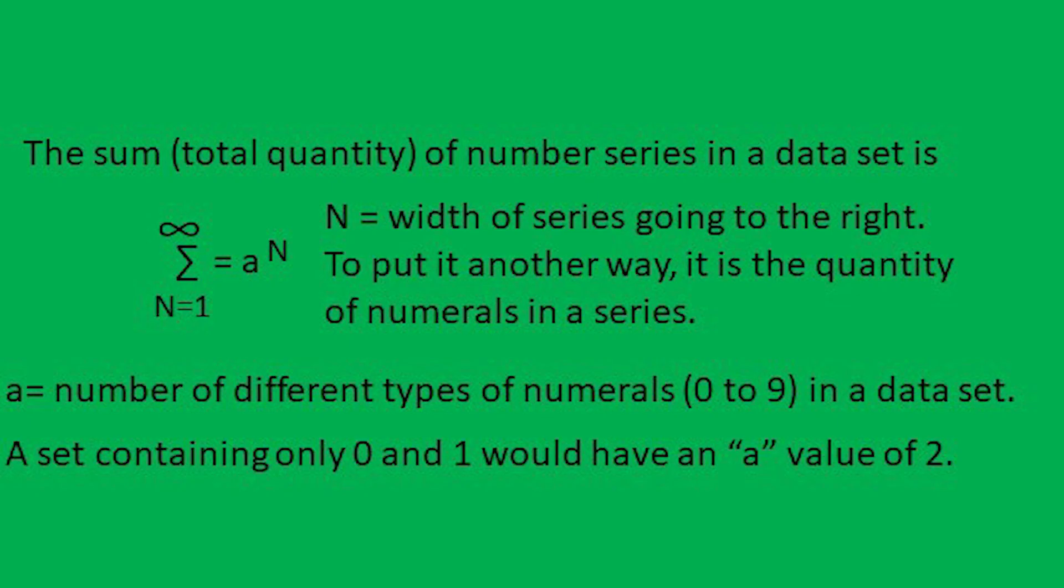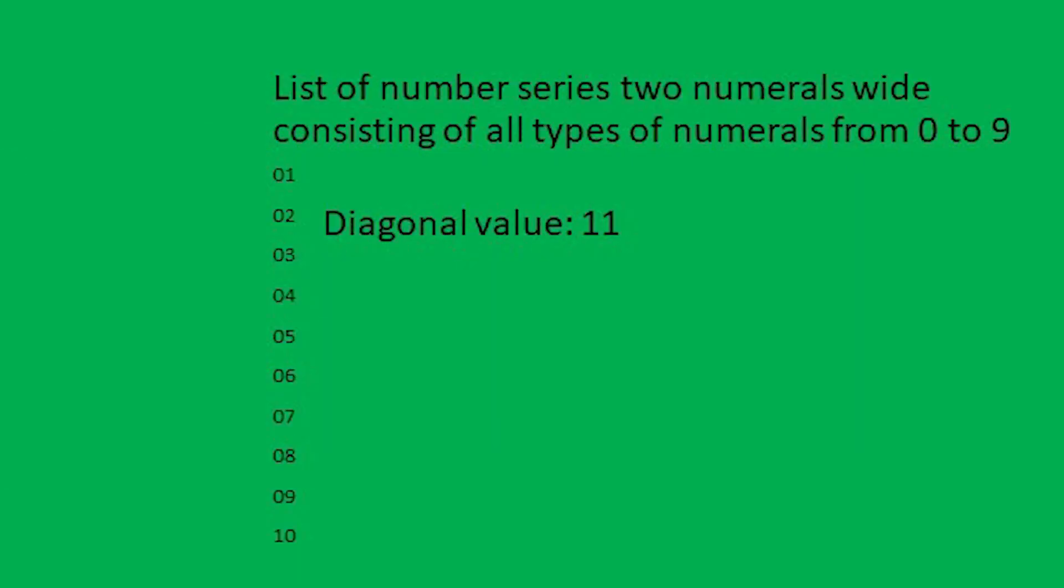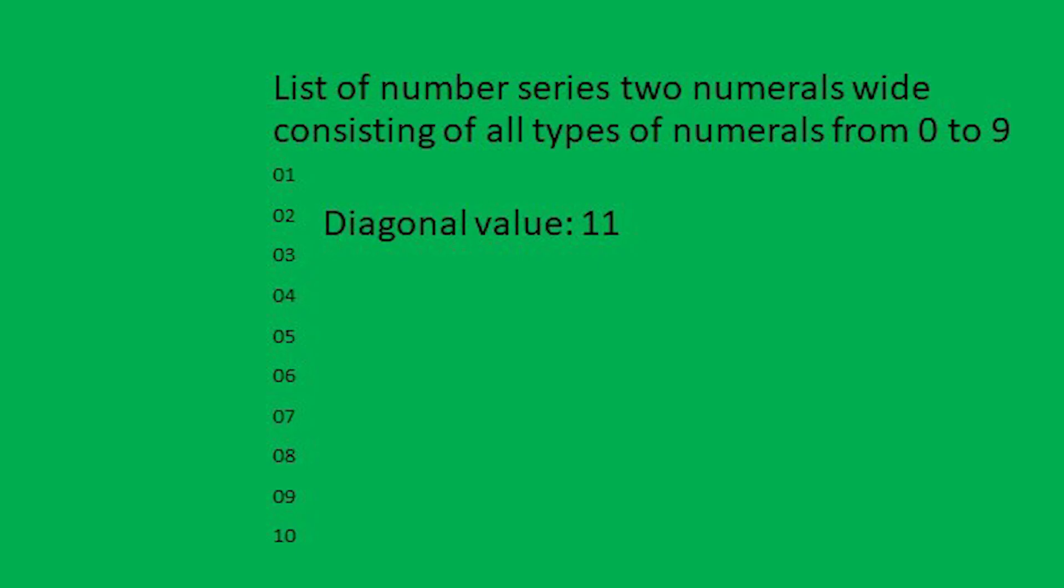Now let's say you've created another dataset that is two numerals wide, but contains all types of numerals from 0 to 9. The resulting dataset would be 100 number series long. The diagonal of two starting series would be 1,1. And look, here, 1,1 is lower in the set, meaning the diagonal failed to produce a unique value.